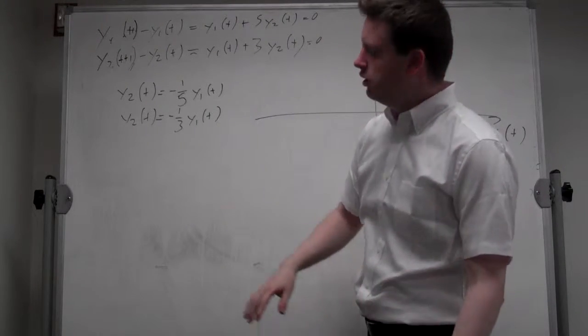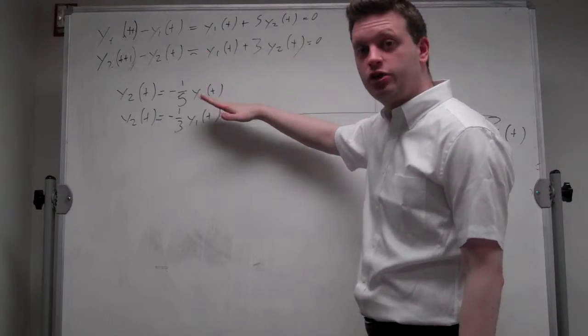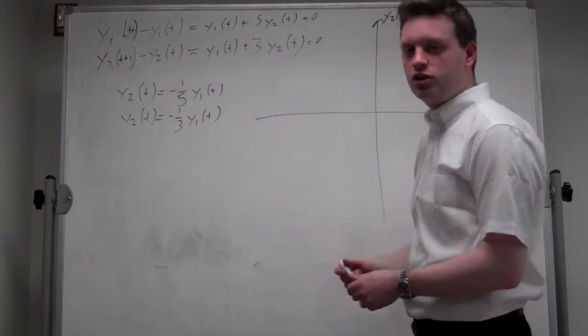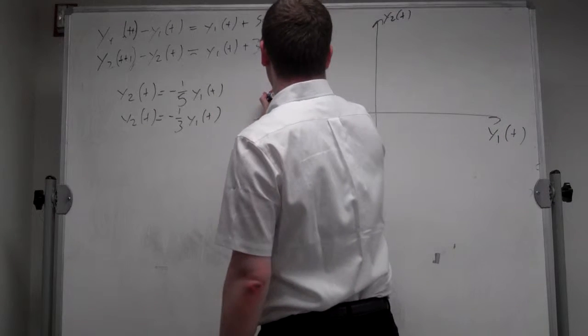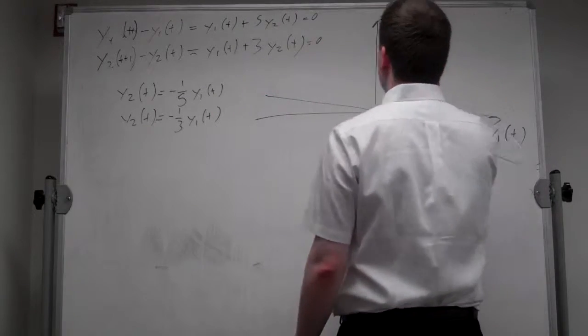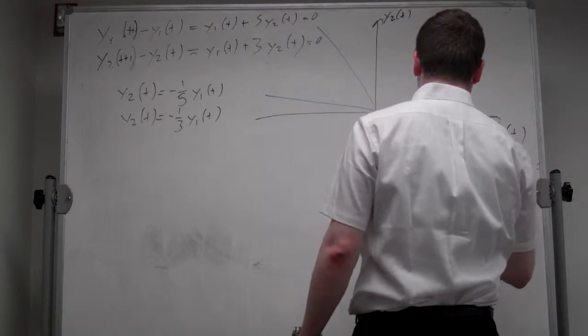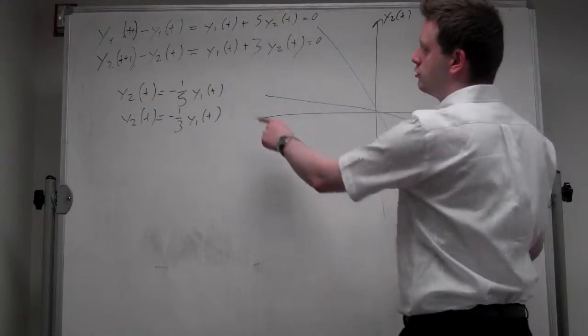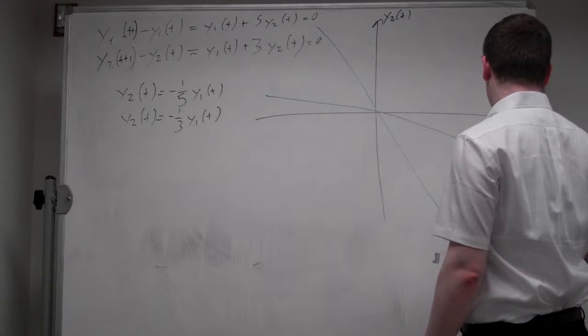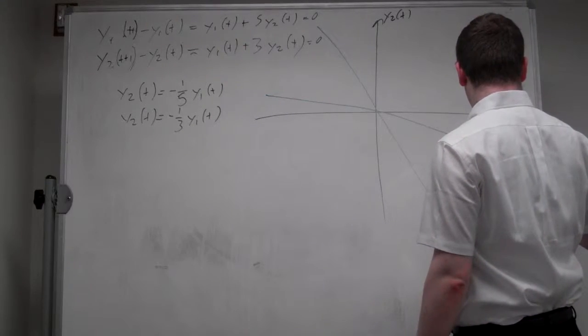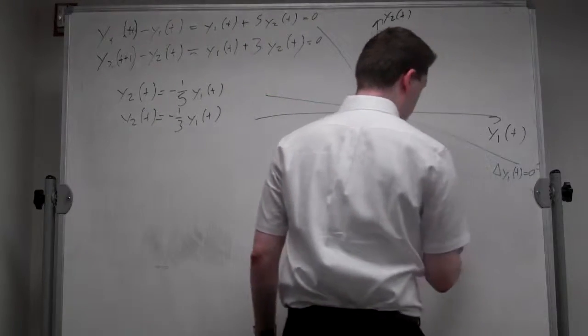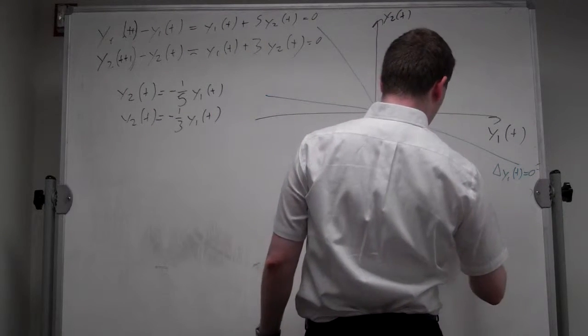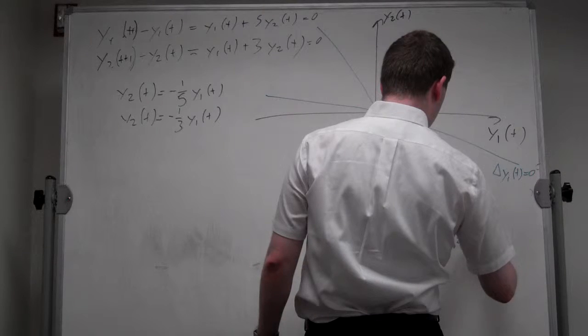This implies that 1 over 5 is flatter than 1 over 3, but both have a negative slope, so I can draw one line flatter and the other one steeper. The flatter one is 1 over 5, so this was the first equation, so the change in y_1t was equal to 0, and the second one was the steeper one, so the change in y_2t is equal to 0.